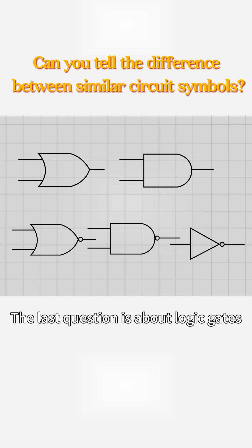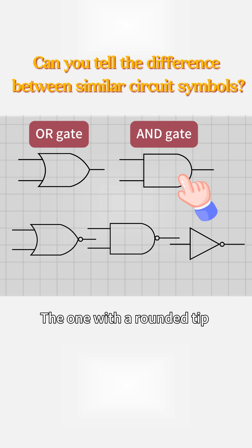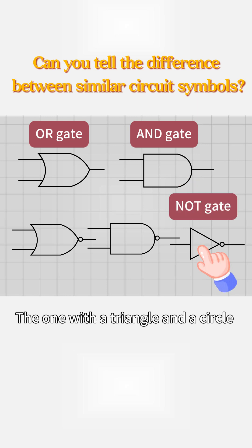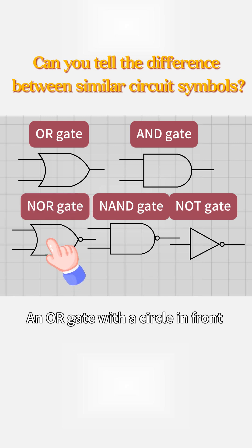The last question is about logic gates. Which one is an OR gate? The one with a pointed tip is the OR gate. The one with a rounded tip is the AND gate. The one with a triangle and a circle is the NOT gate. A NOR gate with a circle in front is a NOR gate. An OR gate with a circle in front is a NOR gate.